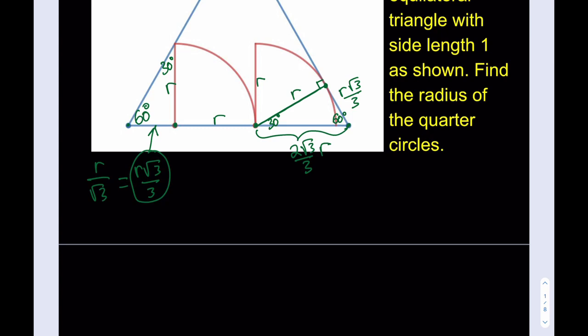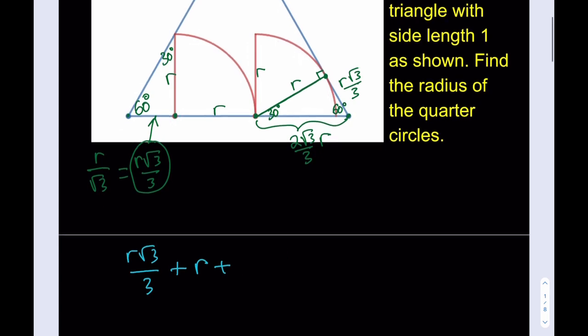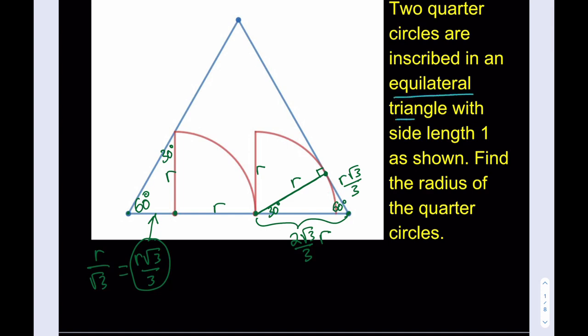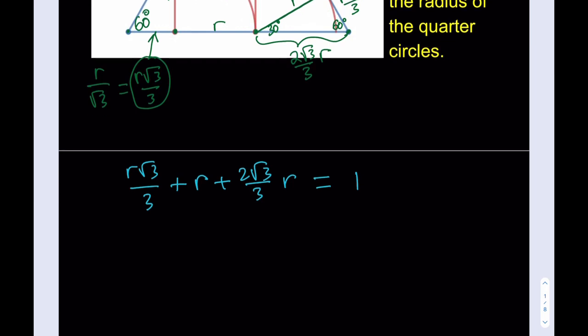What do we know? We know that this is R root 3 over 3 plus R plus 2R root 3 over 3. Or I could just write it to keep the original, 2 root 3 over 3R. And as you know, they all add up to 1 because we're given that the side length for the equilateral triangle is 1. It's given in the problem. What are we supposed to do? We're supposed to solve for R. Let's go ahead and do that.